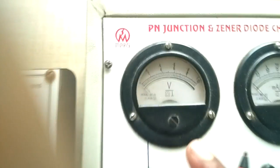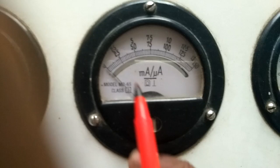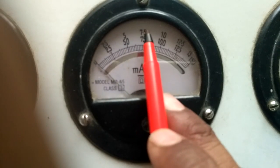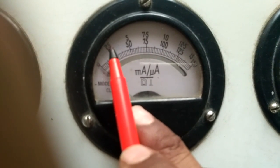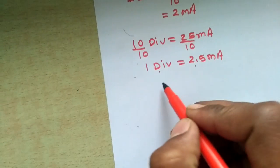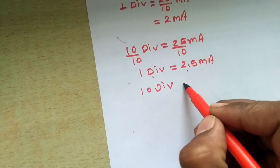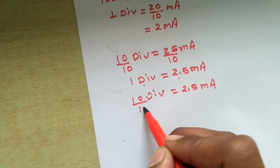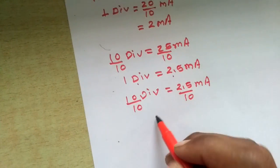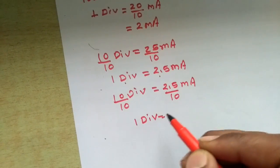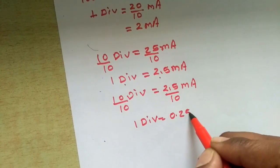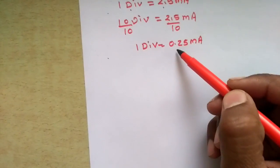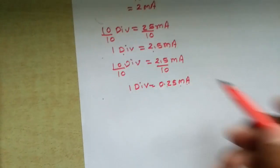So 10 divisions equals 2.5 milliampere — this is the least count of this instrument. Looking at the upper part of the scale, this 10-division range is representing 2.5, so divide this value by 10 and you get the value of one division: the least count is 0.25 — sorry, 0.25 microampere. Each line of this instrument is actually representing 0.25 microampere.